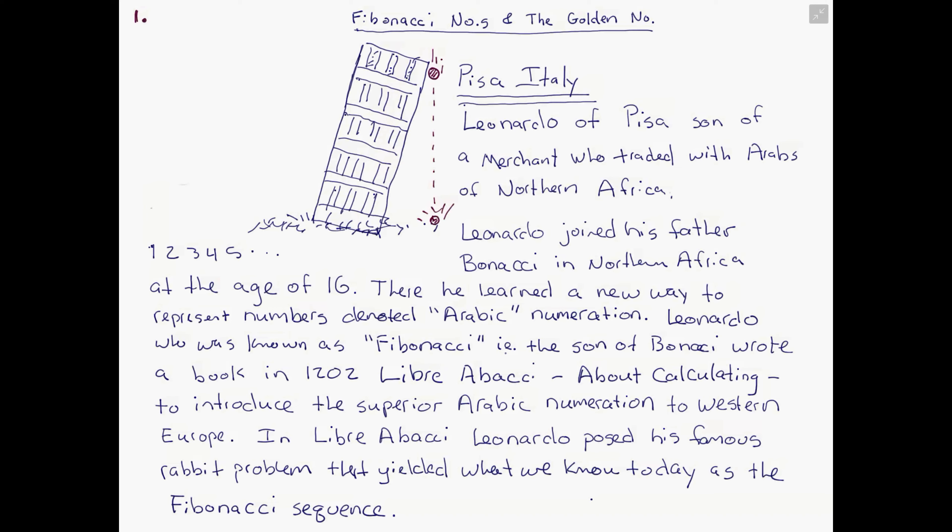So in the year 1202, Leonardo wrote the book Liber Abaci, which in Latin means 'about calculating' — a book about calculating. In this book he proposed switching to the superior Arabic notation and provided numerous examples of calculations, directions on how they worked and how they could be done quickly in the field. Leonardo tried to bring this back to Europe with him.